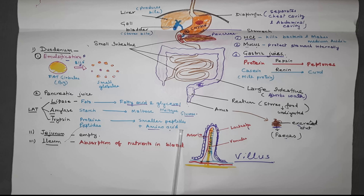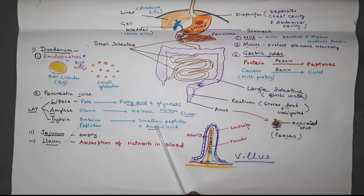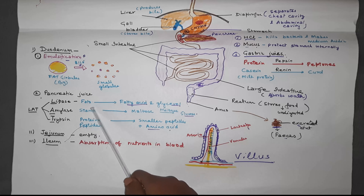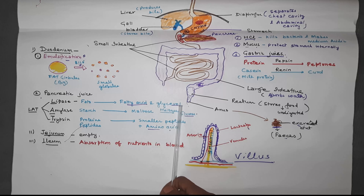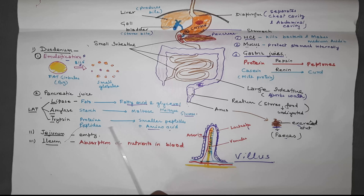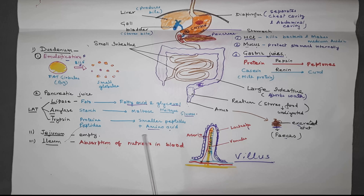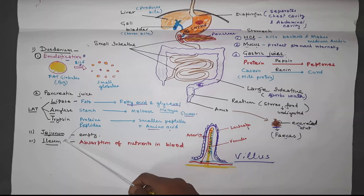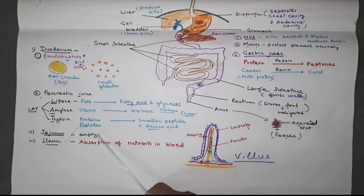Trypsin changes proteins and peptides into smaller peptides and amino acids. This is a step-by-step process, breaking bigger molecules into smaller ones, with the end product being amino acids. So to summarize: fats end as fatty acid and glycerol, starch ends as glucose, and proteins and peptides end as amino acids.